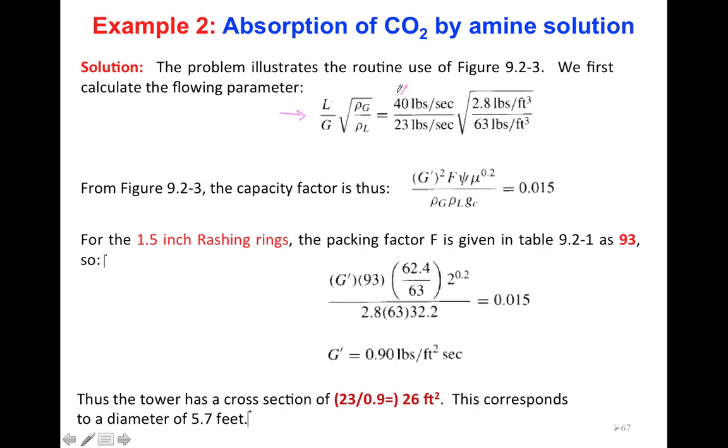L/G times square root of ρg/ρl. L, mass flow rate of liquid is 40, mass flow rate of gas is 23, the gas density 2.8, liquid density 63. If you calculate this term, it's going to be 40 divided by 23 times square root of 2.8 divided by 63. If you do this calculation, you should get 0.37 here.